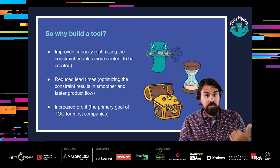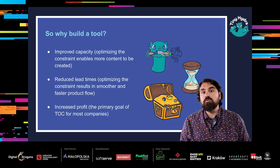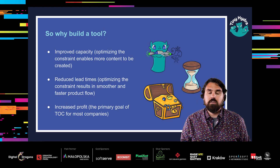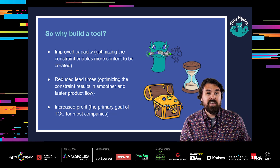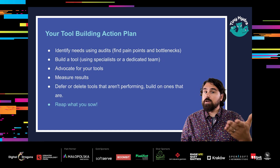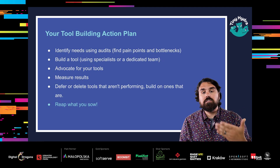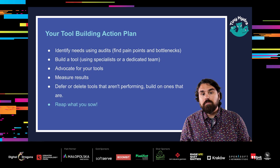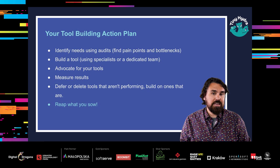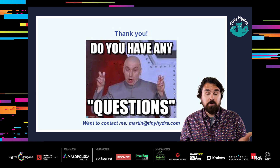In summary, the results of building custom tools are typically improved capacity and reduced lead times due to optimizing the constraint, enabling you to get more content created in shorter periods of time with smoother and faster production flows — leading to increased profitability. To achieve these results: identify needs using audits, productive communication, and well-organized issue tracking; build tools ideally using a dedicated team or specialist; and track effectiveness using metrics such as time saved. Your people will really appreciate the bandwidth they get to dedicate to doing things they love instead of data entry or other menial tasks.